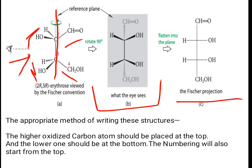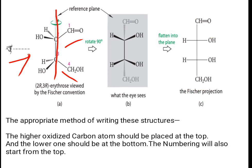The appropriate method of writing these structures is that the higher oxidized carbon atom should be placed at the top and the lower one at the bottom. Numbering will also start from the top. The CHO aldehyde group is the higher oxidized carbon, so we number it as carbon one and write it at the top. The next will be two, this carbon will be three, and this will be four.